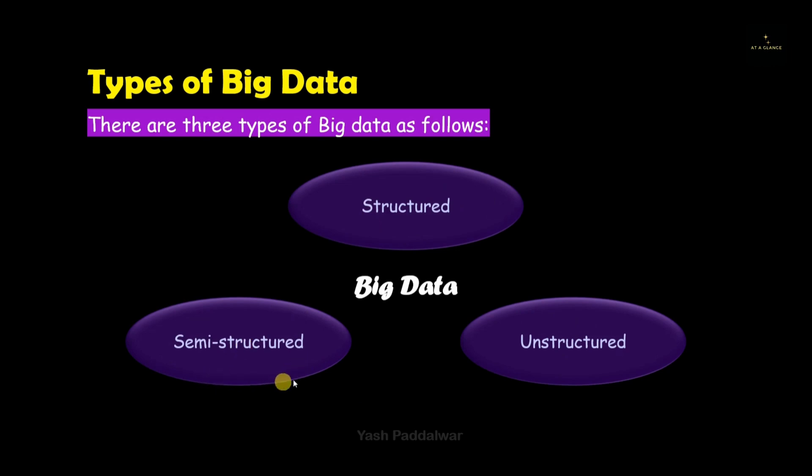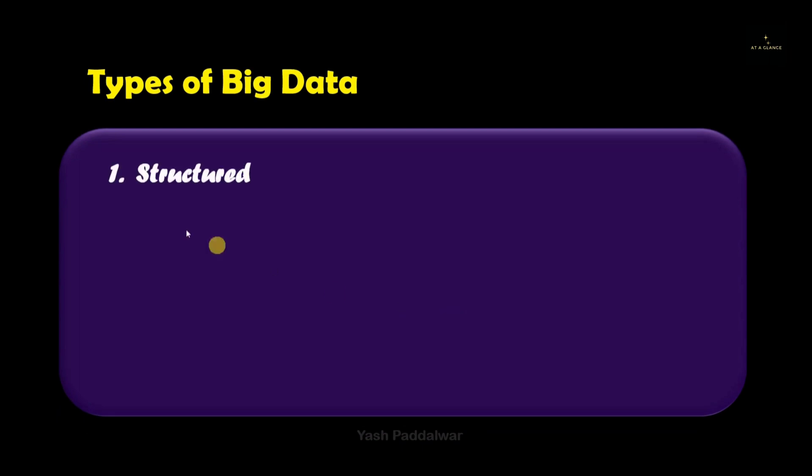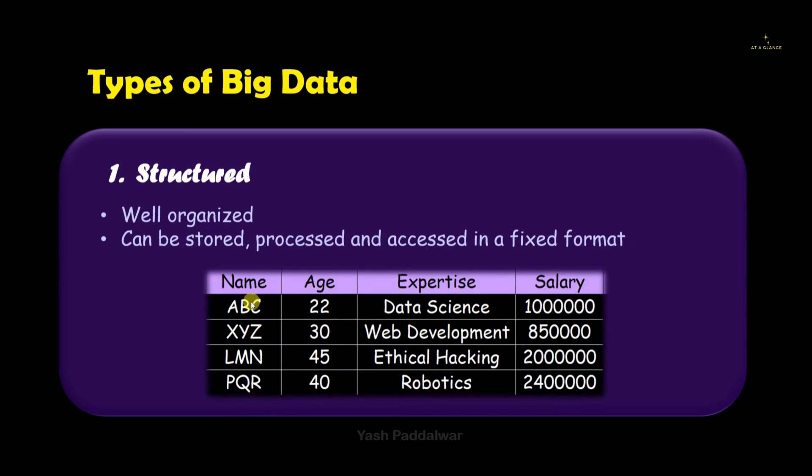We are going to look into all of them one by one. So let's start with the very first type of big data which is structured data. It is well organized. The name itself tells that it will be in a proper format, data which has to be there for easy analysis, easy storage, and easy processing of it. Also note that it will be in a fixed format.